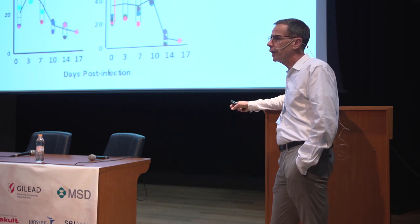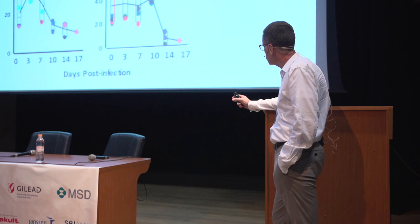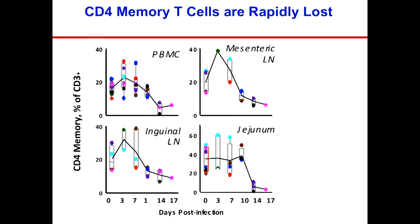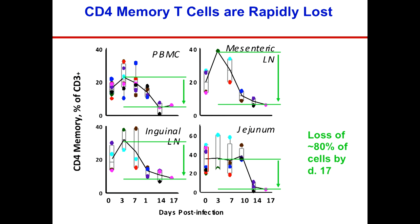Why am I interested in HIV and SIV infection within lymph nodes? This is work done several years ago in Mario Roederer's group where they looked at SIV infection in monkeys, taking peripheral blood at multiple time points and lymph node and gut tissue at multiple time points after infection. After SIV infection, between about days 7, 10, and 14, there is a massive loss of CD4 T cells, and much of it is within lymphoid tissue. Lymphoid tissue was a major source of SIV and HIV replication and CD4 depletion.